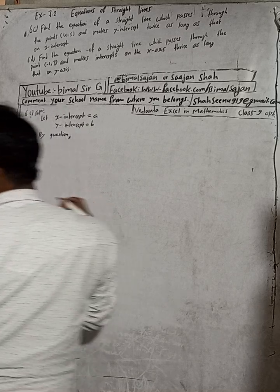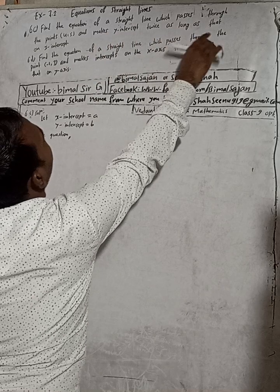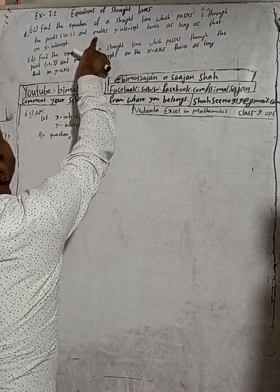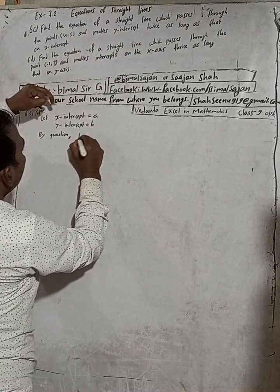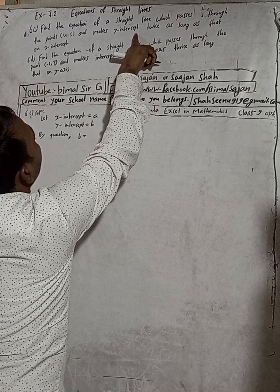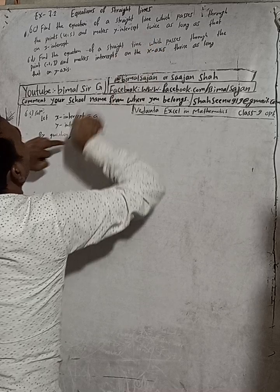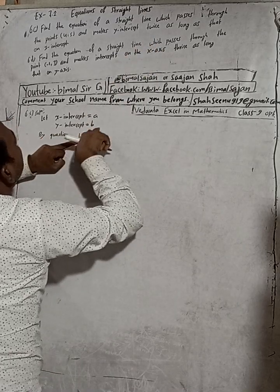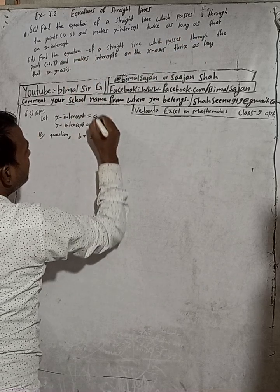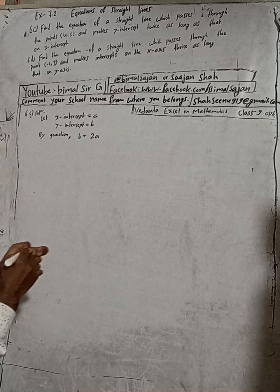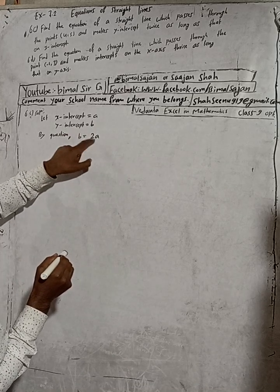Now, by question or according to question, find the equation of a straight line which passes through the point and makes y-intercept twice. So y-intercept, that means b, is equal to twice of x-intercept. Here, y-intercept b is equal to twice of a, the x-intercept.